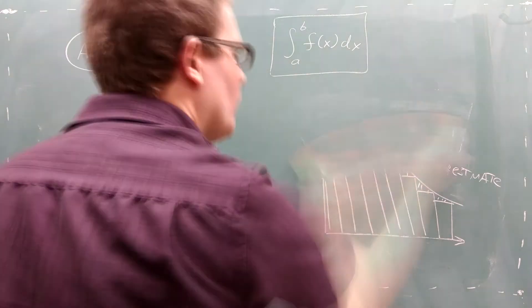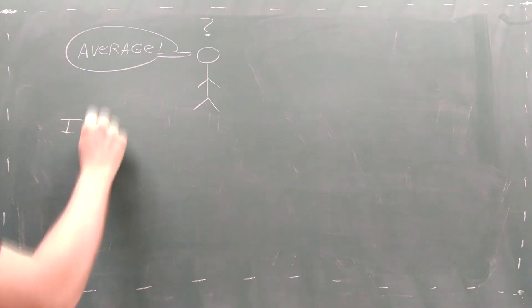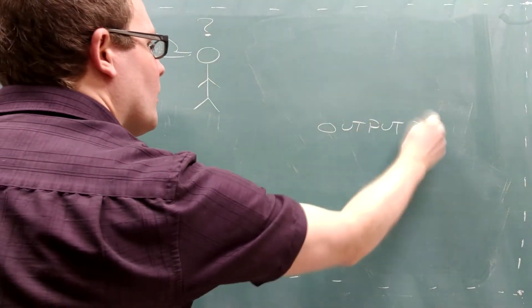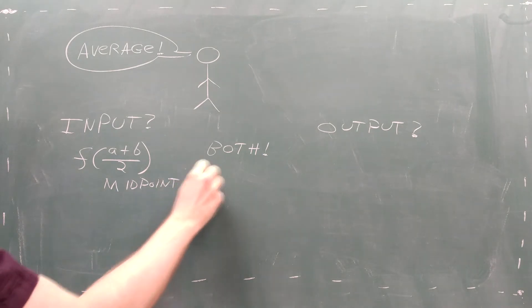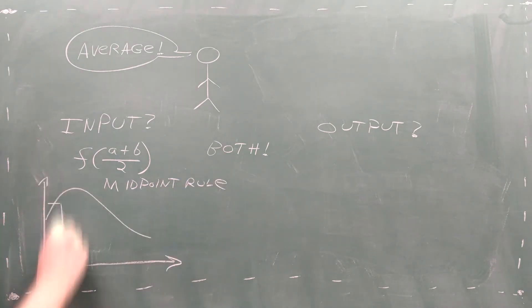But here we run into an interesting question. What exactly do you average, the input values or the output values? It turns out you can do both. If you average the input values, you're using the midpoint rule. It still creates a simple rectangle, but it uses the value of the function in the middle of the step.